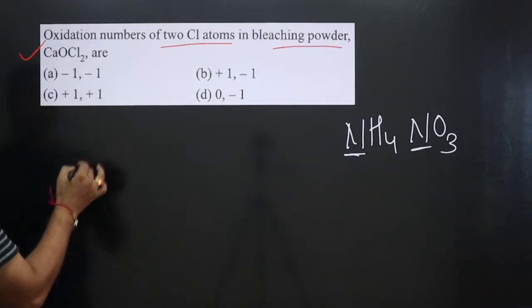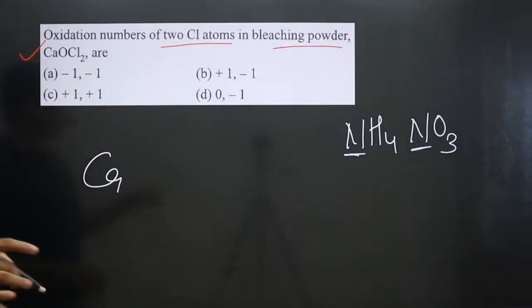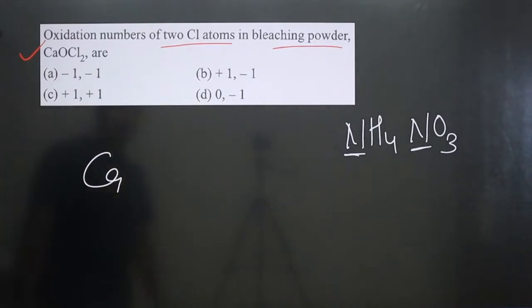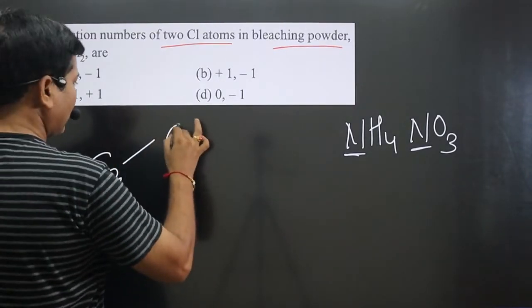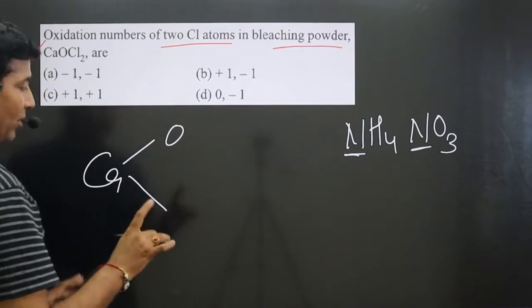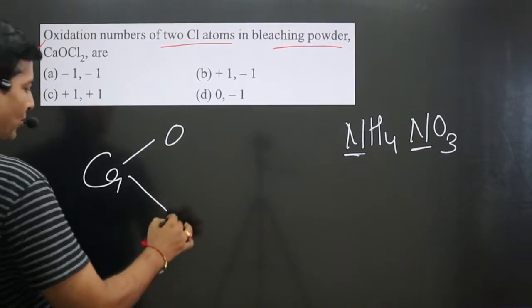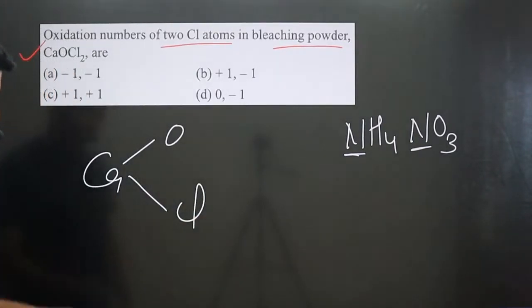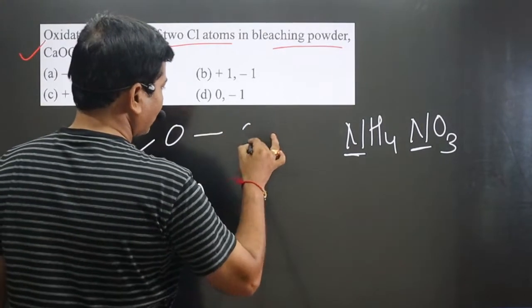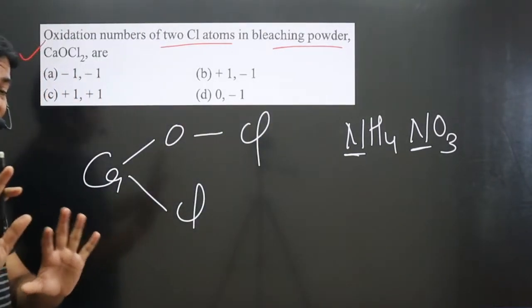And structure you have to keep in mind. This is calcium. Calcium can form how many bonds? Two bonds because it is a second group element. This is oxygen. And we have only one oxygen. So I attach one Cl. Valency of calcium is satisfied. But still one Cl is left. Cl can form only single bond. So I attach one Cl over here. This is the structure.